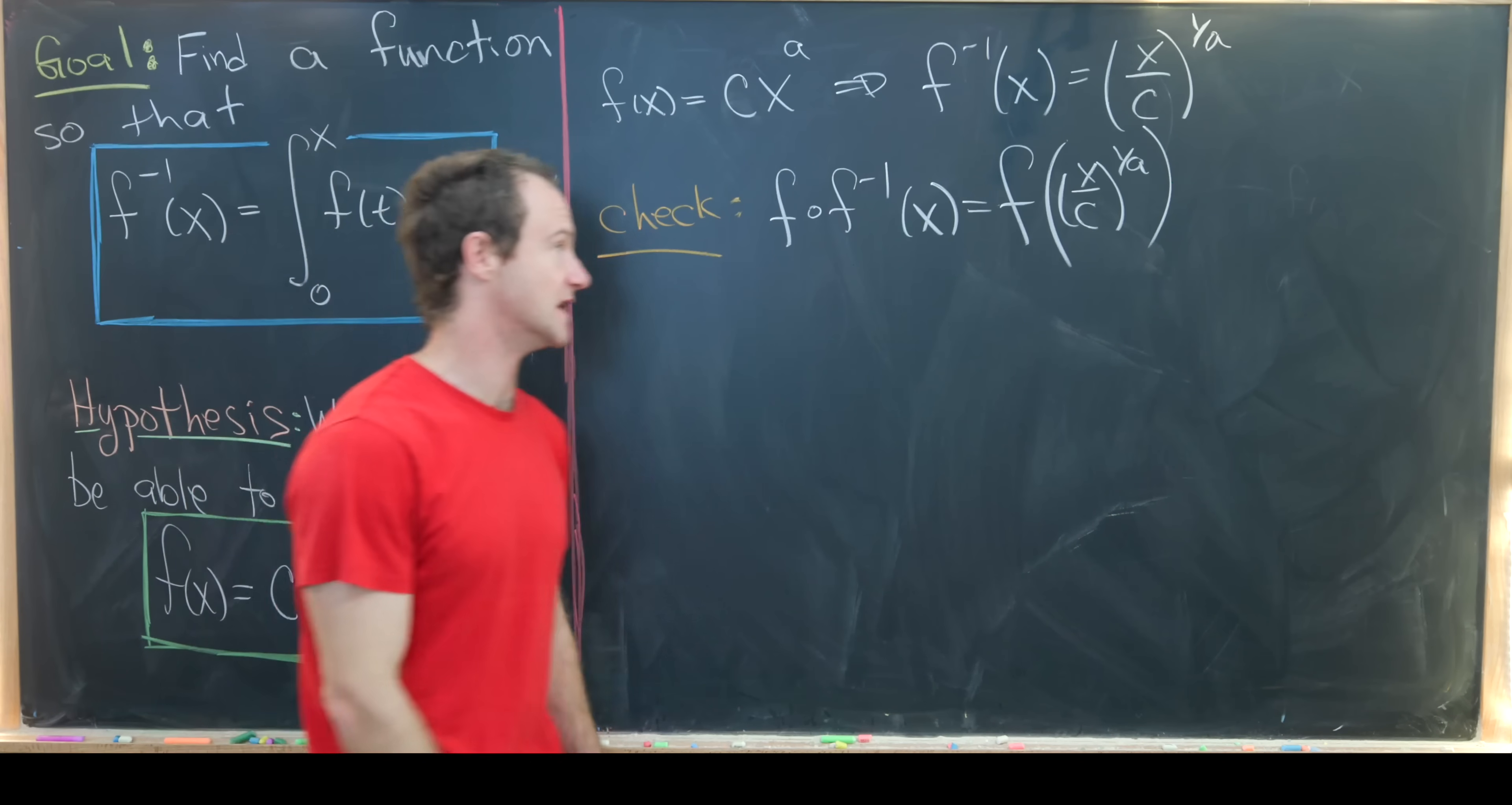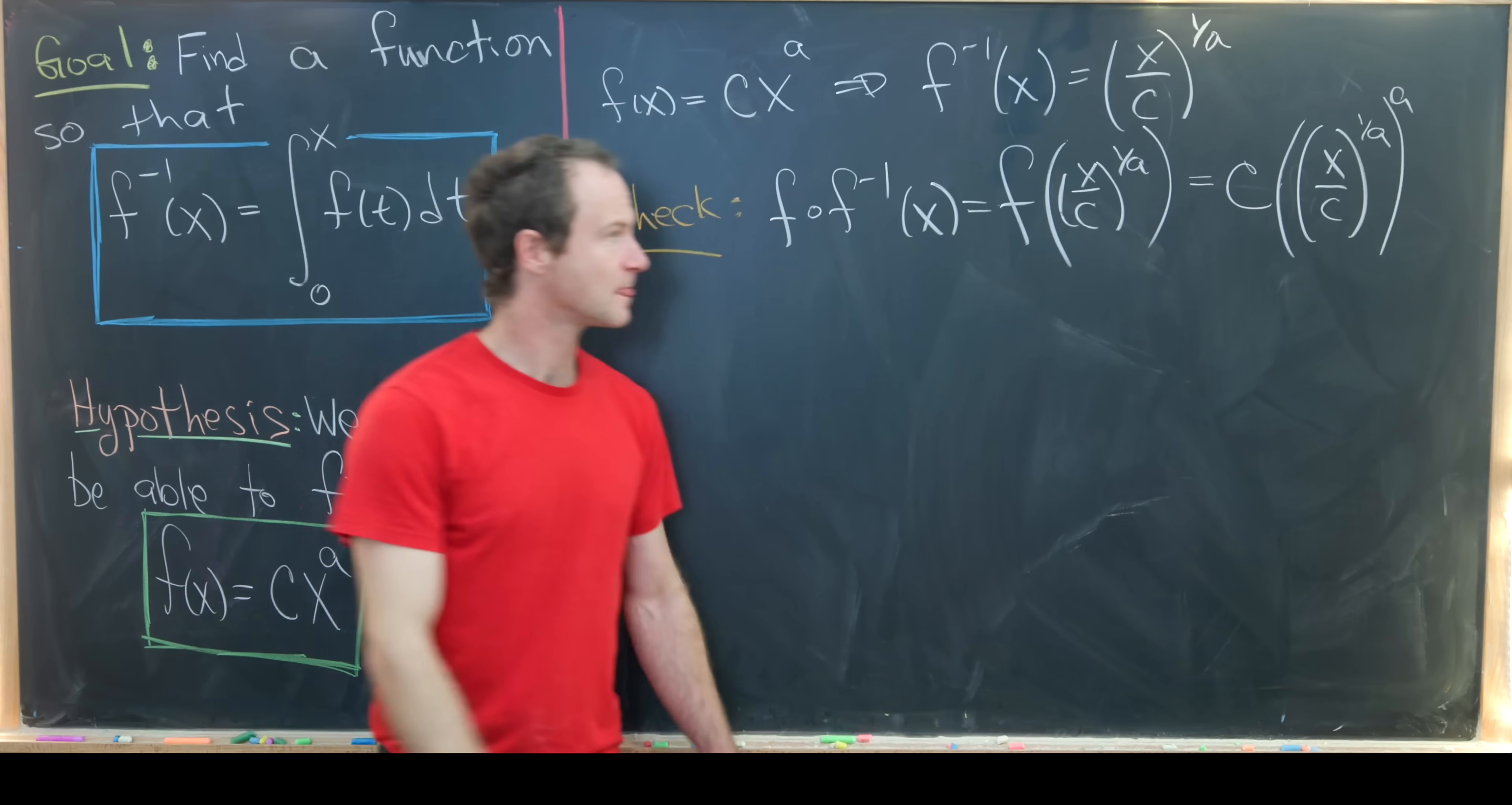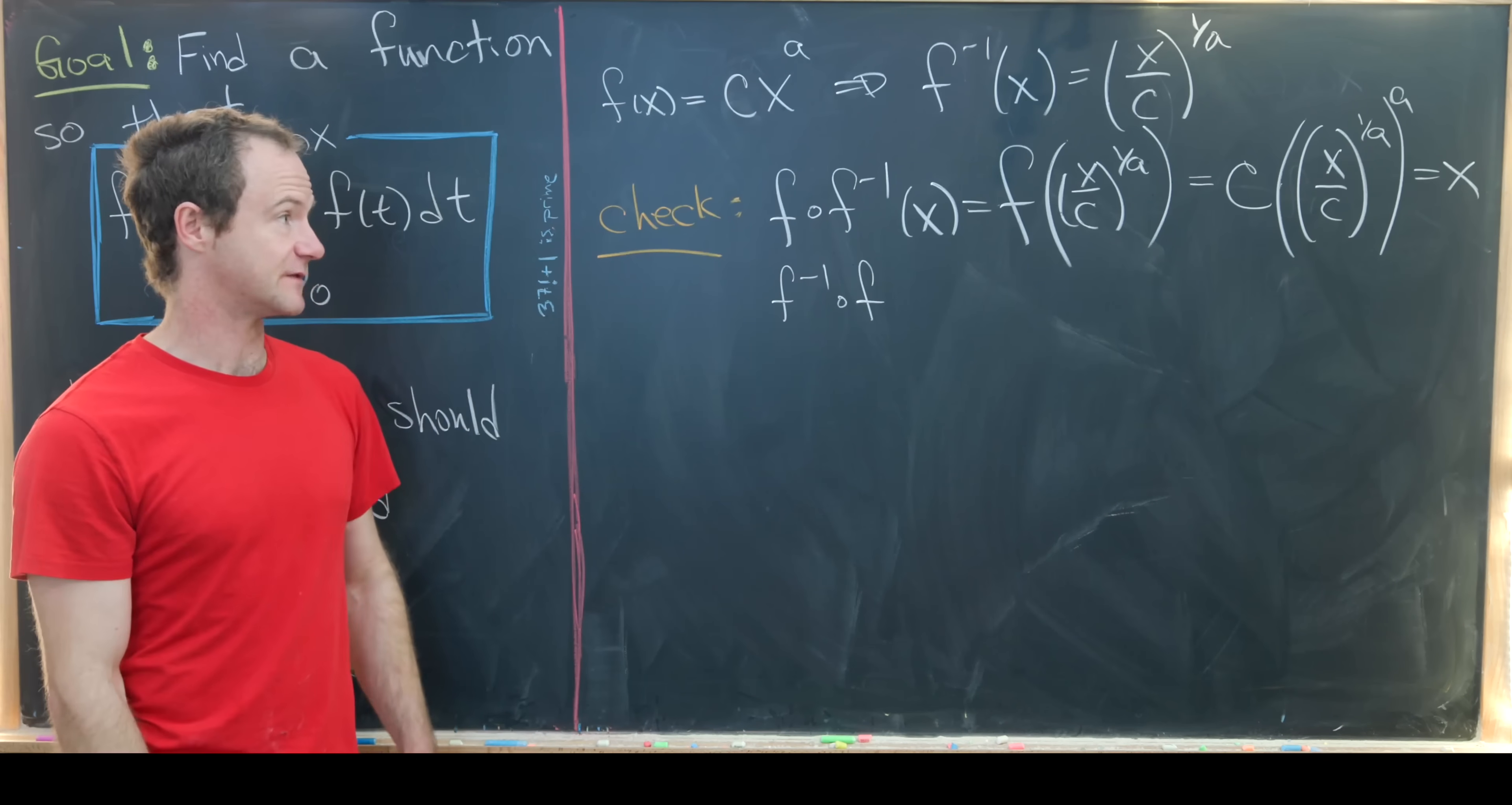Our function f raises x to the ath power, so it raises this argument to the ath power and multiplies by c. We've got c times (x/c to the 1 over a) all to the a power. If we unravel that from inside out we'll just get x, which is the identity function. This gives us evidence that we have found the inverse function. We would also need to check f inverse composed with f, but I'll leave that to you.